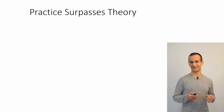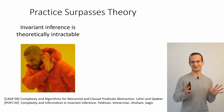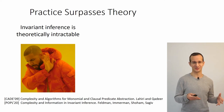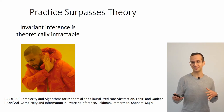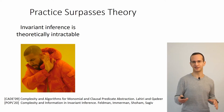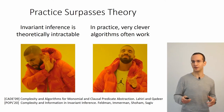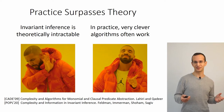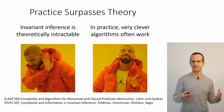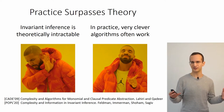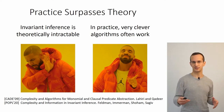Now, invariant inference is so hard: already for boolean programs with polynomially long invariants, it is NP-hard with access to a SAT solver to find an invariant. But in practice, invariant inference algorithms do pretty well in many cases finding an invariant. So there's a gap between the theory and the practice of invariant inference which we're trying to address in this work.